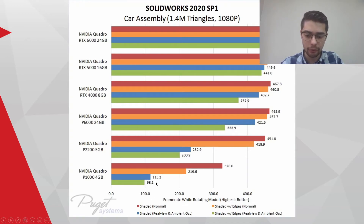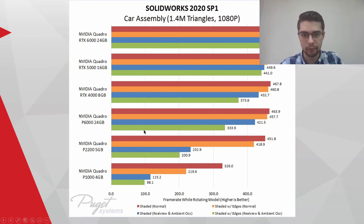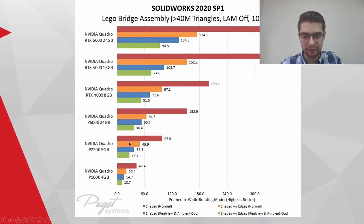These are frames per second — you want these to be higher than 30 or 60. You can see that even the lowest-end Quadro with this type of assembly does fairly well. Moving to an extremely large assembly — in excess of 40 million triangles — the P1000 and even the P2000 are really not up to snuff.